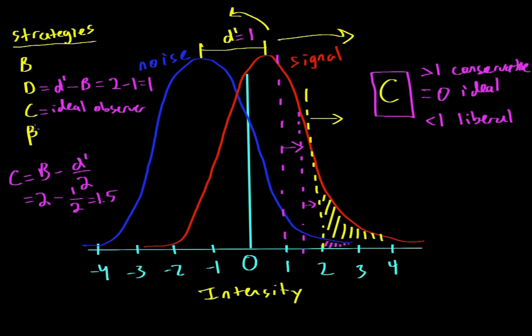So the final variable that we have to talk about is beta. So if we're using this beta approach, we would set the value of the threshold equal to the ratio of the height of the signal distribution to the height of the noise distribution.